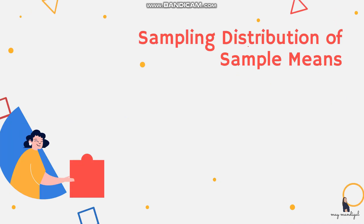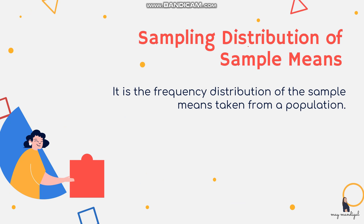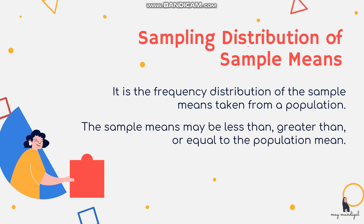Since different samples of a population can have different sets of means, we use the sampling distribution of sample means. It is the frequency distribution of the sample means taken from a population. After identifying all possible samples, we identify all of their means and write them in a table. The sample means may be less than, greater than, or equal to the population mean. This helps us determine if the chosen sample truly represents the population of our study.